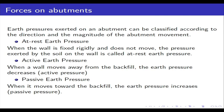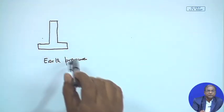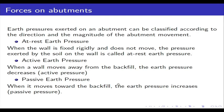At-rest earth pressure: when the wall is fixed rigidly and does not move, the pressure exerted by the soil on the wall is called at-rest earth pressure. Active earth pressure: when a wall moves away from the backfill, the earth pressure decreases. Passive earth pressure: when the wall moves toward the backfill, the earth pressure increases. Based on these three cases, you find out the bending moment, shear force, and other values.